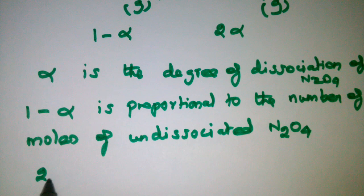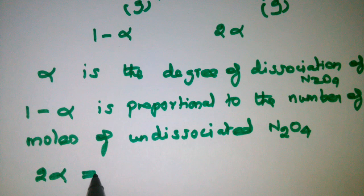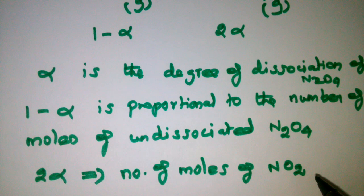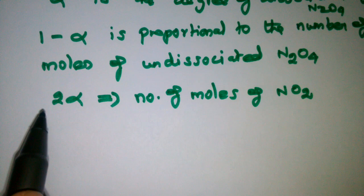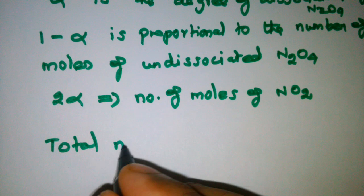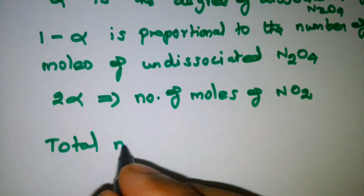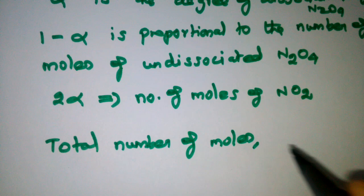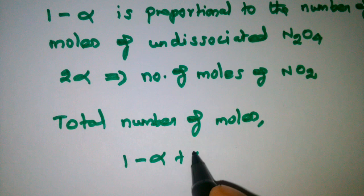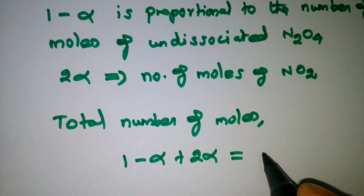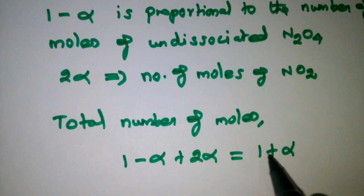2 alpha is proportional to the number of molecules of nitrogen dioxide. Now we are going to calculate the total number of moles. Total number of moles means: 1 minus alpha plus 2 alpha, which equals 1 plus alpha. So 1 plus alpha is the total number of moles.